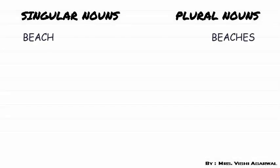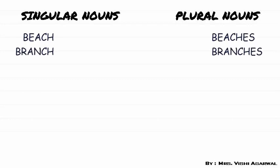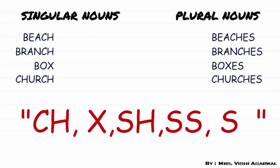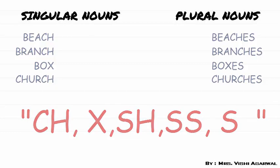Now some more examples: beach becomes beaches, branch becomes branches, box becomes boxes, church becomes churches, and many more. You can see these are the words which are ending with CH, X, SH, SS, and S.